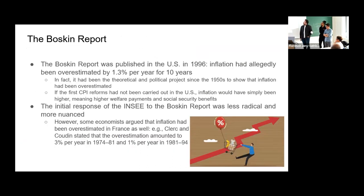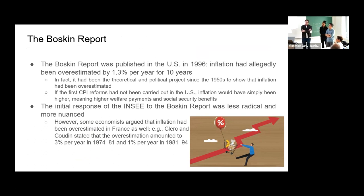The Boskin report of 1996 argued that inflation had been overestimated by 1.3% per year for the past ten years. One interviewee in your paper said this was a political project since the 1950s to show that inflation had been overestimated — this was in the US context.